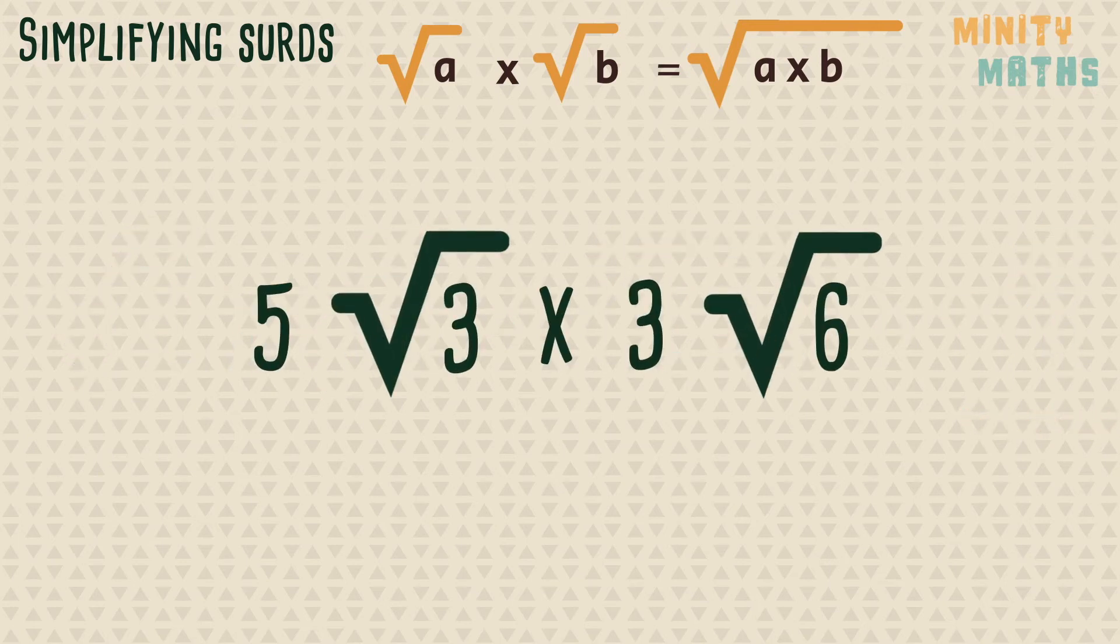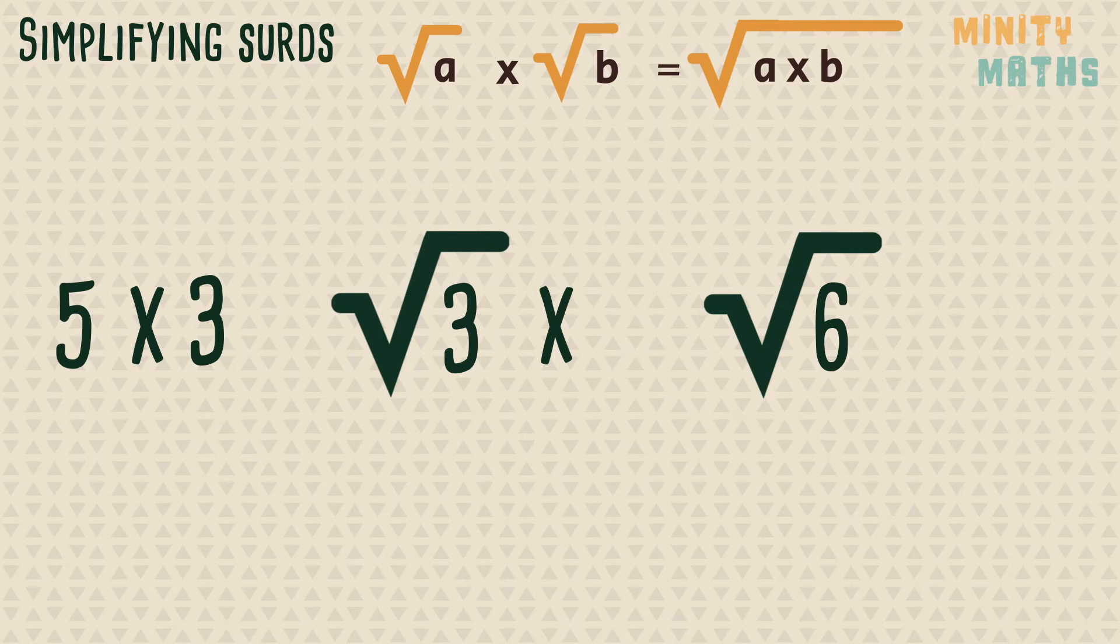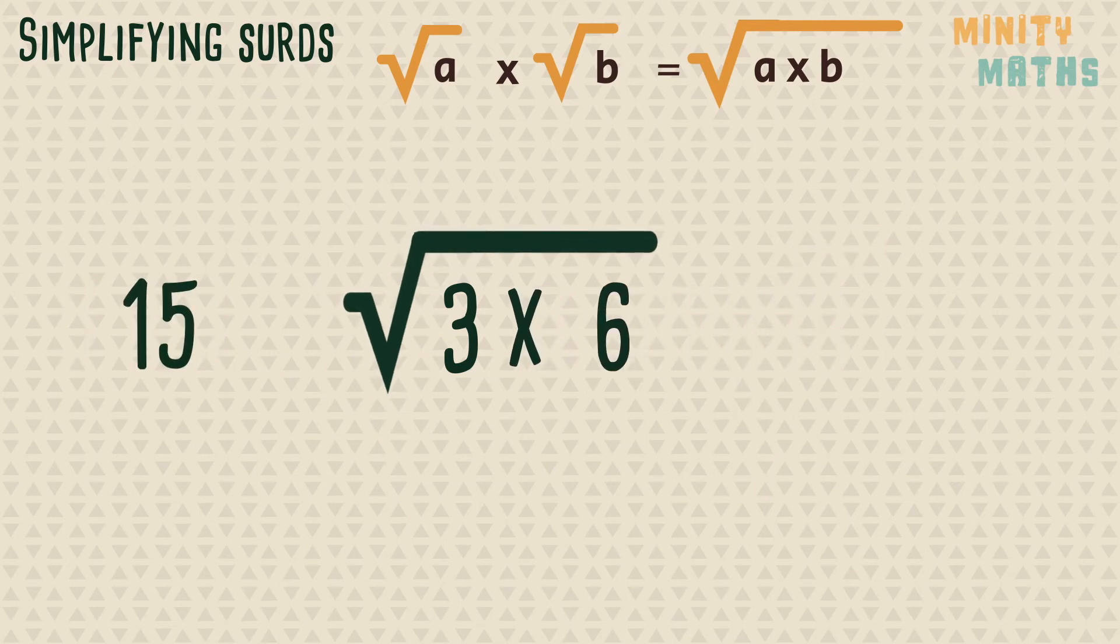Here is a more complicated example. Remember that the multiplication signs between the whole numbers and the surds have been left out. We can rearrange this expression so that we can multiply the whole numbers together first. Next we multiply the surds using the above rule.